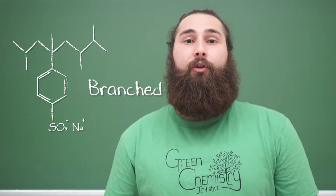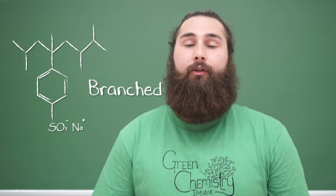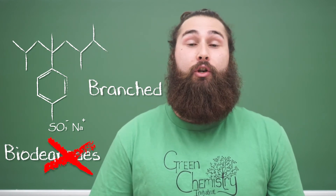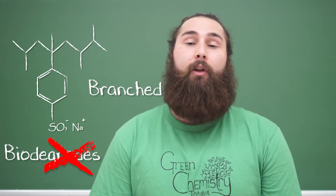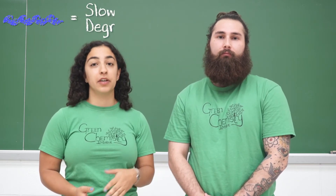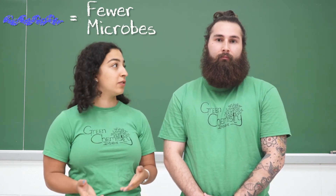If you compare LAS to the branched version, you can immediately see that the alkyl chain looks very different. This molecule was also used as a detergent, just like the linear version. But because of the location of the branches, microbes cannot perform beta-oxidation because there are no good sites for the reaction to be initiated. Therefore, these branched detergents have been phased out of most developed countries because of their persistence. The main way these molecules break down is through microbes when oxygen is present, so if they end up directly in water, for example straight into a lake, they'll degrade more slowly, even the linear versions, because there are fewer microbes in water than in soil.